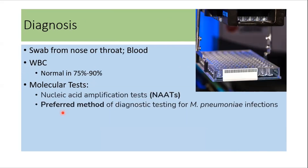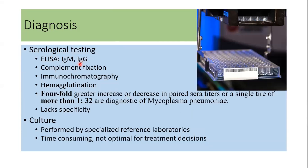Diagnosis is made from a swab of the nose or throat, or via serology in the blood. WBC count is usually normal in 75 to 90 percent of cases. A molecular test such as nucleic acid amplification test (NAAT) is the preferred method of diagnosis. Other serological tests like ELISA, complement fixation, immunochromatography, and hemagglutination can be done, but these tests are not specific.